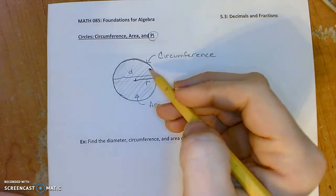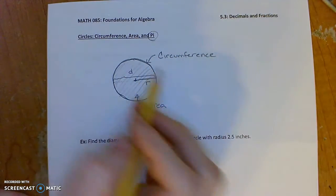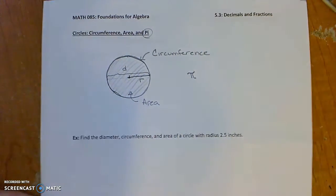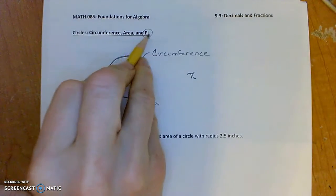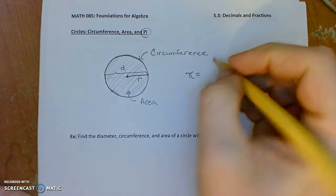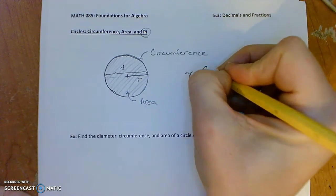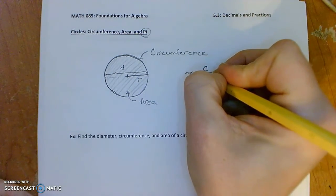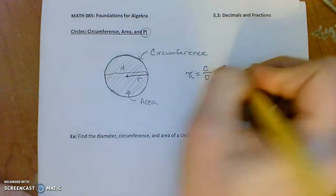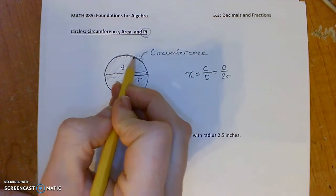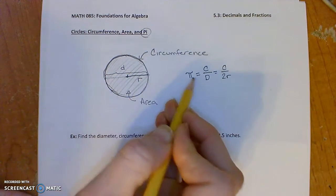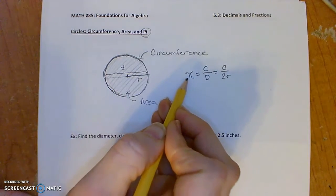So there is a famous number which is called pi. It's written with this Greek letter here, pi, it's pronounced pi. And that is the ratio of a circle's circumference to its diameter, or the diameter is also twice the radius. So take any circle, find the distance around it, divide by the distance across it, and what you get is always this constant pi.